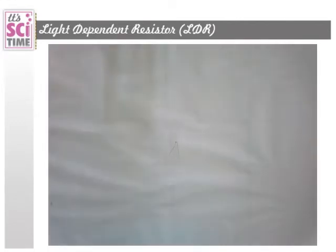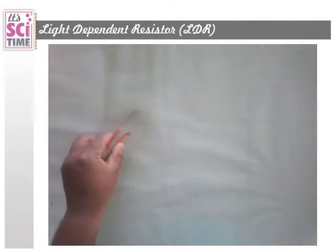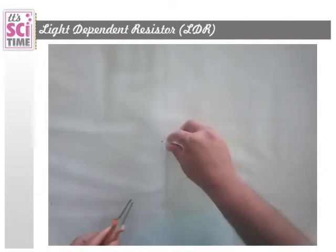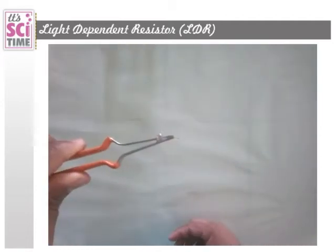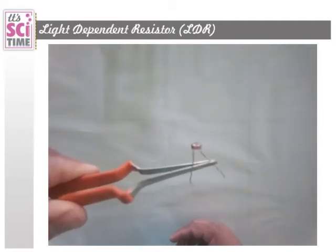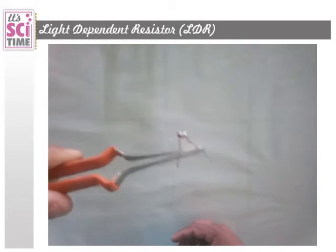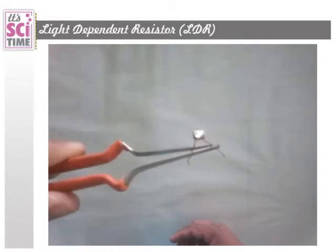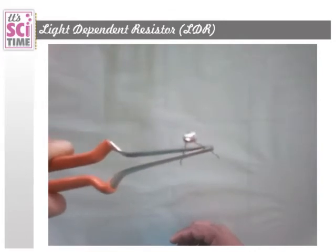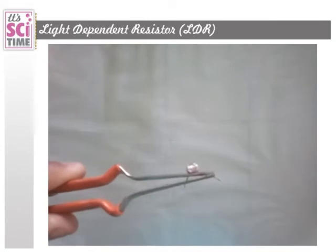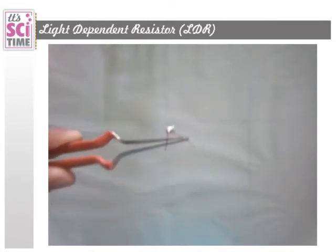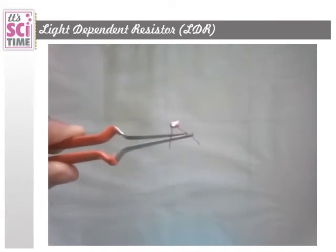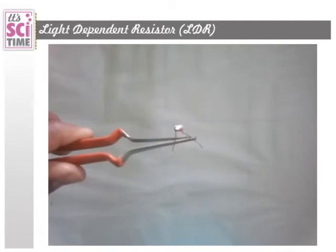This component is also a resistor called the Light Dependent Resistor. It is a very small component. In short form we call it LDR — L for light, D for dependent, R for resistor.